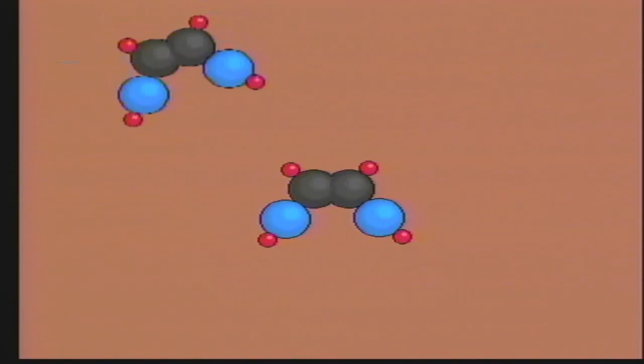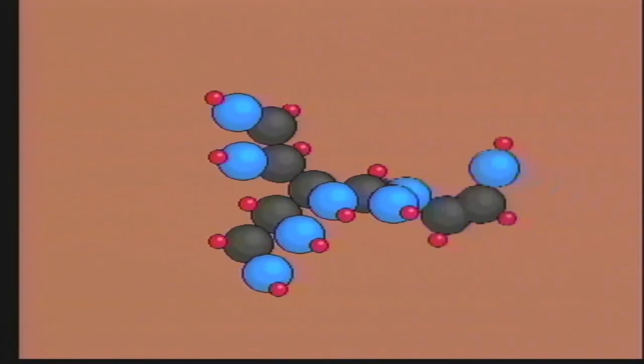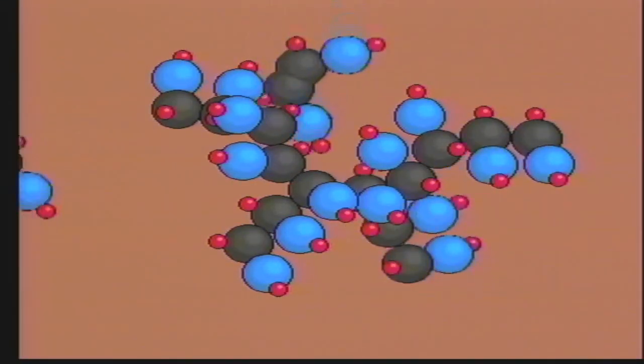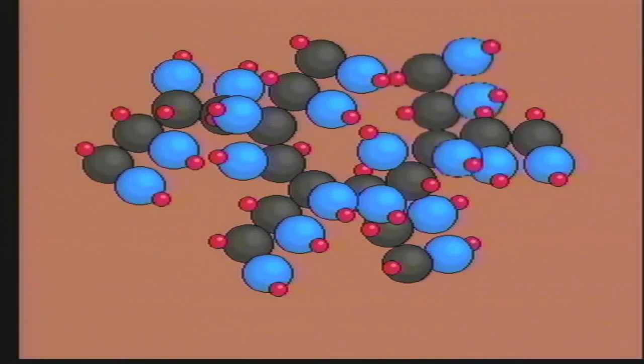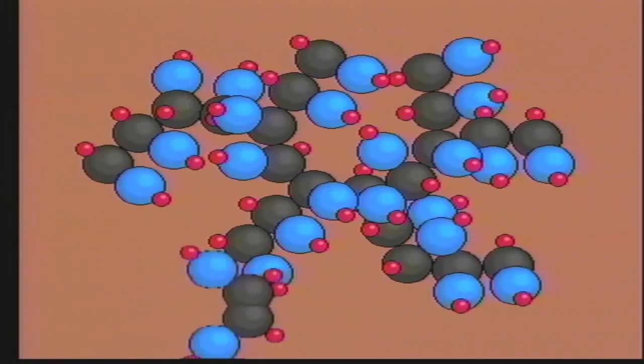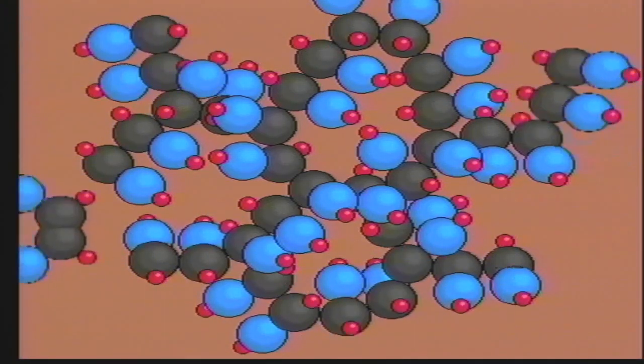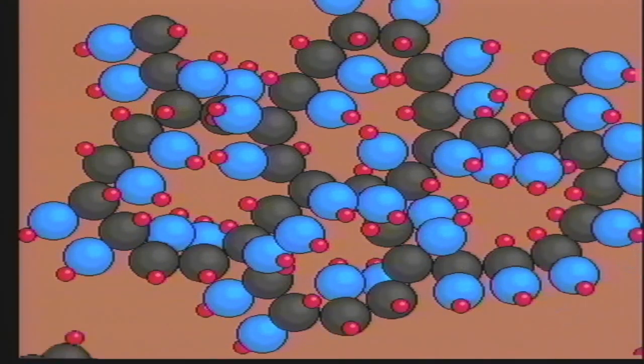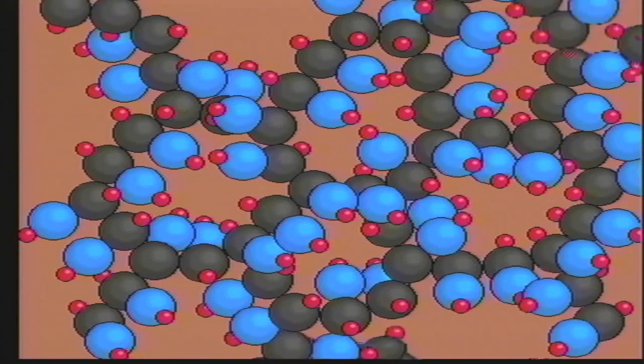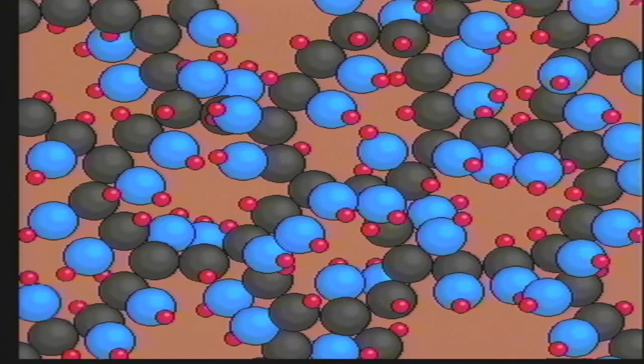Ethylene glycol monomers linked together in sheets create the polymer Mylar. Mylar is a thin film that is incredibly strong and has a wide variety of uses.